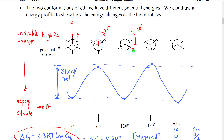We would then rotate the hydrogen continuing past the rear hydrogen to where we are 60 degrees apart again — that would be another staggered conformation. Then we could rotate again to create another eclipsed, rotate again to create another staggered, and essentially if we kept rotating we would end up back where we started.